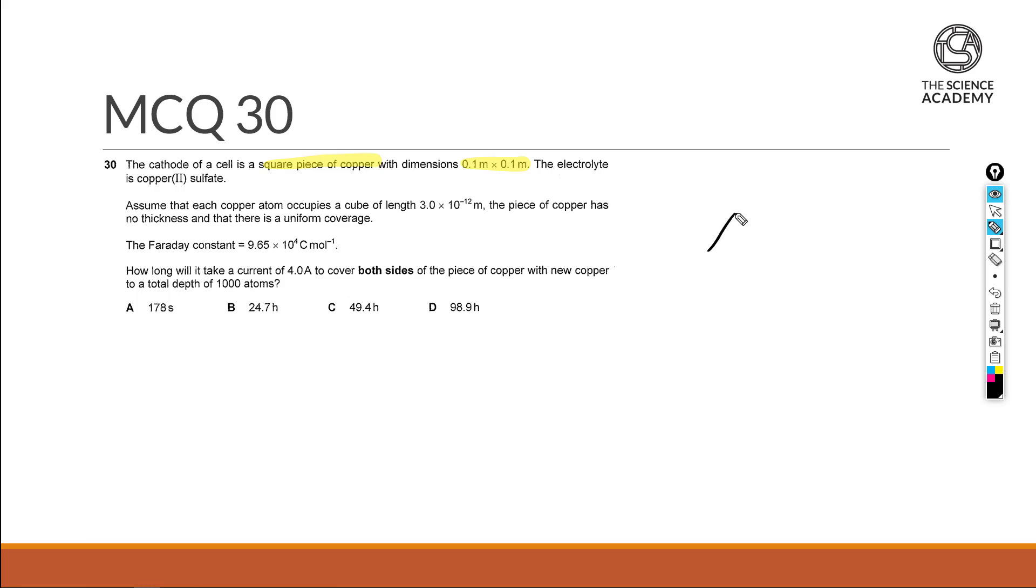So just drawing it out here first. We are to place copper atoms onto it, with the following assumption that each copper atom has a cube of length 3×10^-12 meter. The piece of copper we're trying to coat has no thickness and uniform coverage.